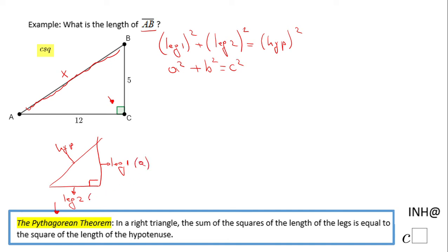And you can interchange a and b. It can be this a and this b, or vice versa. But be sure the opposite to the 90 degree angle, the hypotenuse, is c.